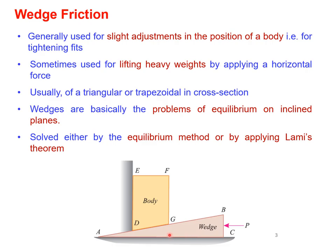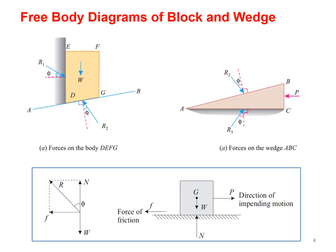The cross section of a wedge is normally triangular or sometimes trapezoidal. Wedge friction problems are treated as problems of equilibrium on inclined planes and can be solved by two methods: one is by equilibrium of forces, and another by applying Lami's theorem. Before solving these problems, we need to understand the free body diagrams of the block and wedge. We also need to refresh the basic concept of angle of friction from the previous lecture.